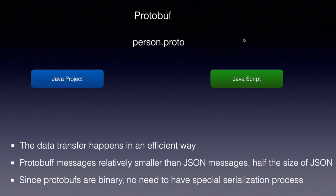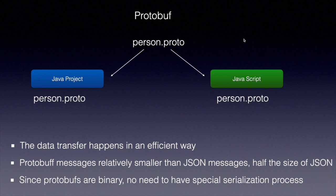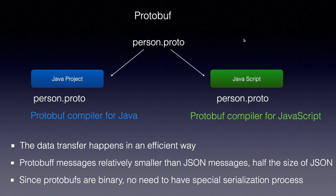The protobuf data format can be used in REST APIs, and client applications can make a REST call to the service API and understand the data without any special REST client or skeleton code at the consumer side. Basically, you need to define a file called a proto file — for example, person.proto — and this file should be shared between two applications.